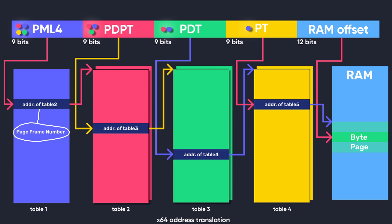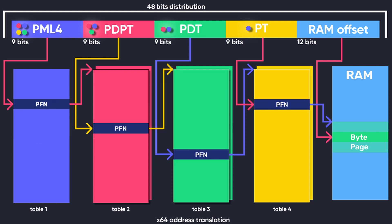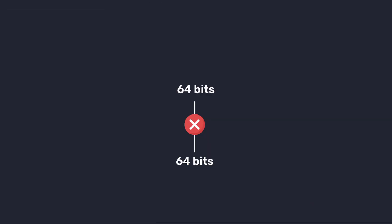If you look closely, you will find that this is actually a distribution of 48 bits — that is 9 plus 9 plus 9 plus 9 plus 12 — and not 64 bits. This is because not all 64 bits are addressable on an x64 system due to limitations from both hardware and software, and in reality only 48 bits are usable.